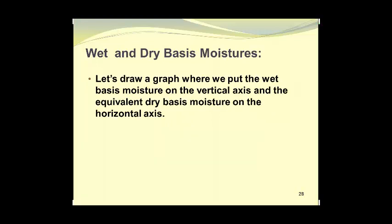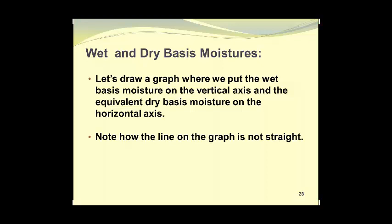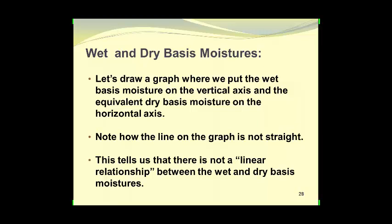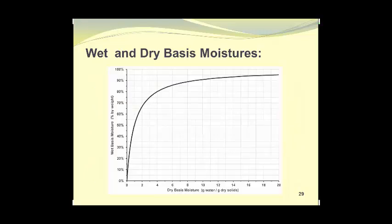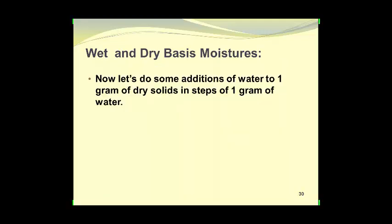Now let's draw a graph with wet basis moisture on the vertical axis and the equivalent dry basis moisture on the horizontal axis, and note how the line on the graph is not straight. This tells us there is not a linear relationship between the wet and dry basis moistures. The graph shows a steep slope at the beginning but becomes almost horizontal as you move toward the top right.